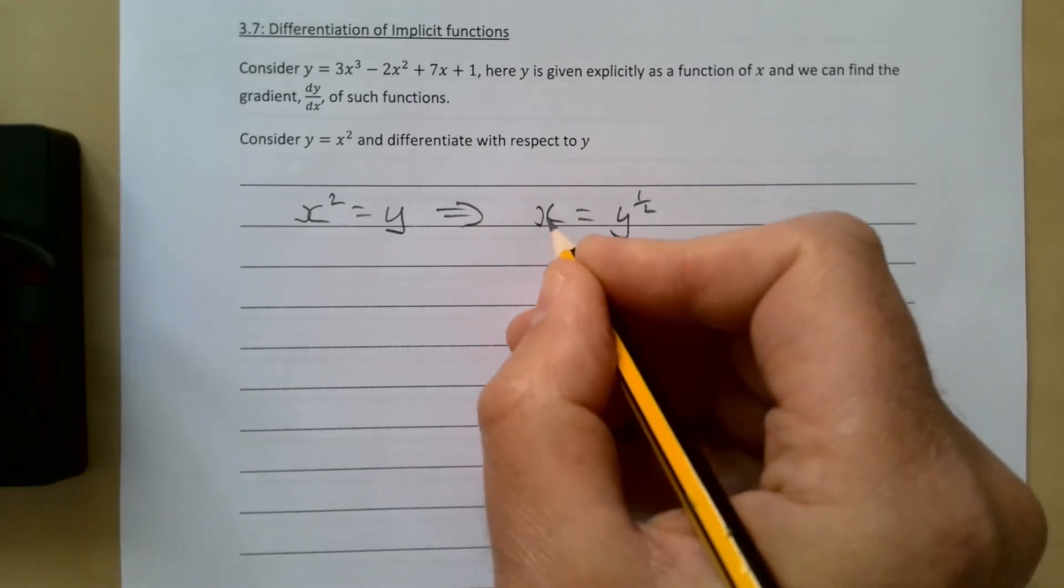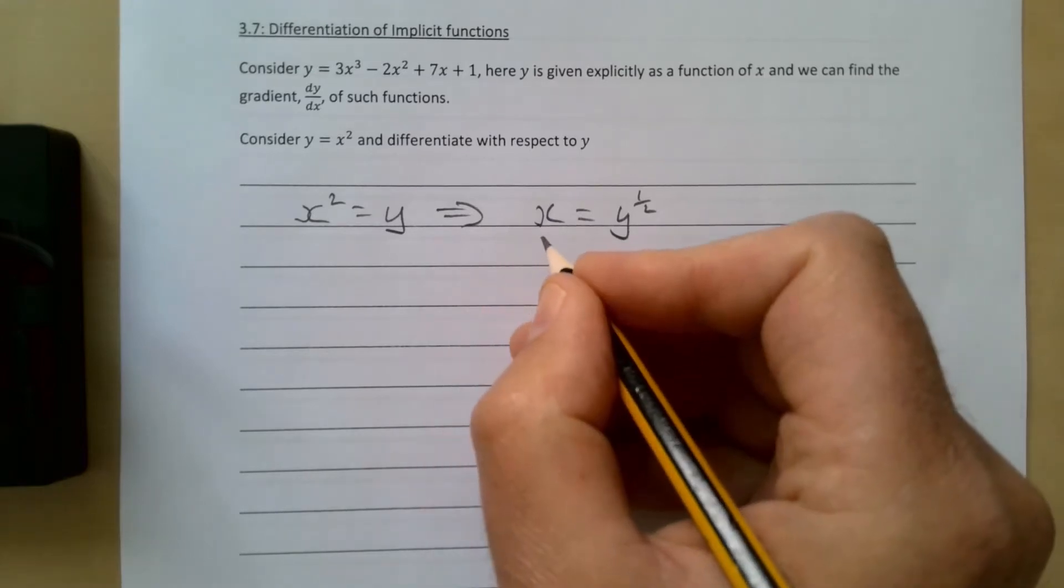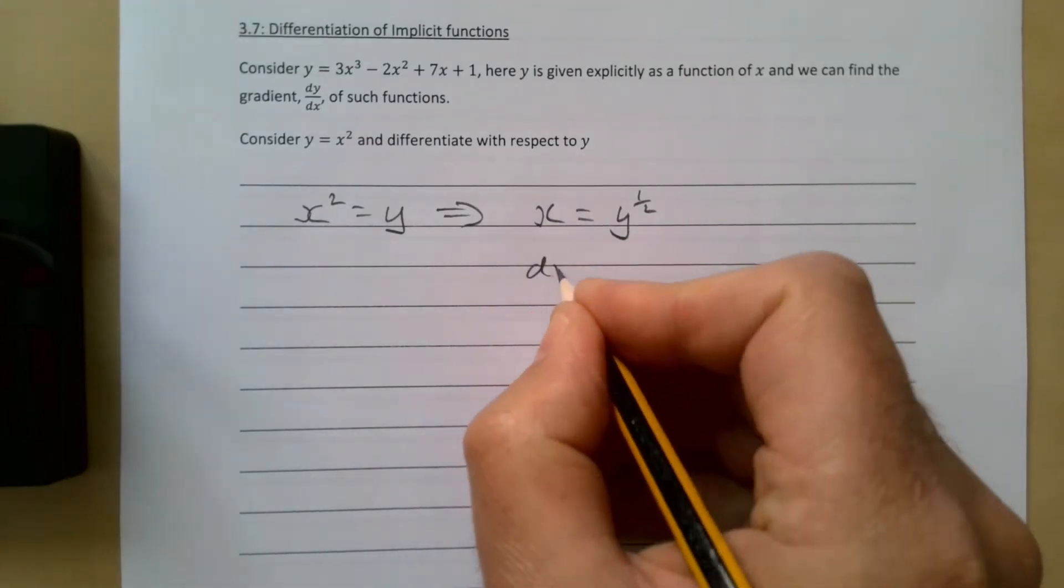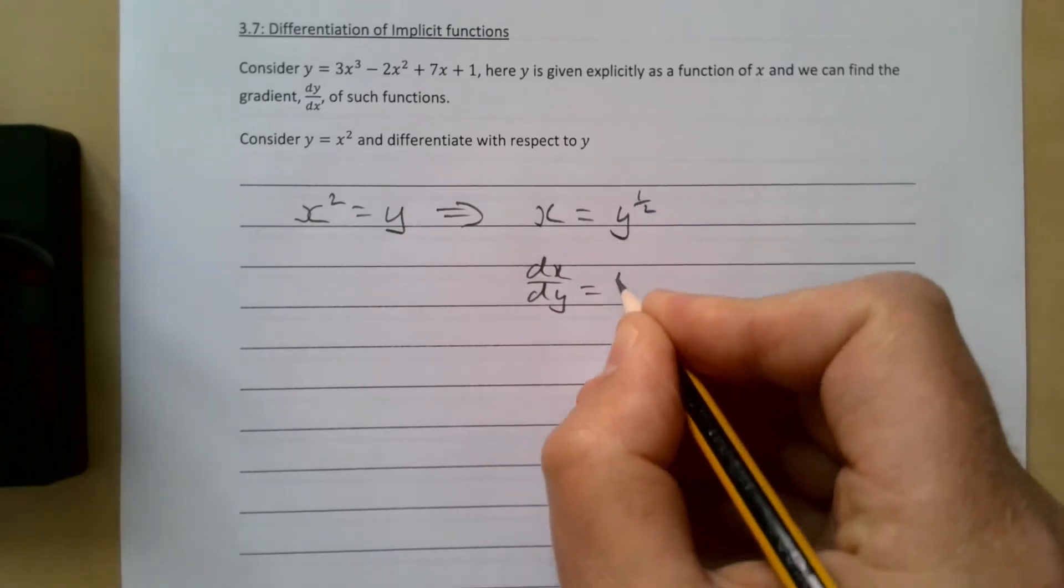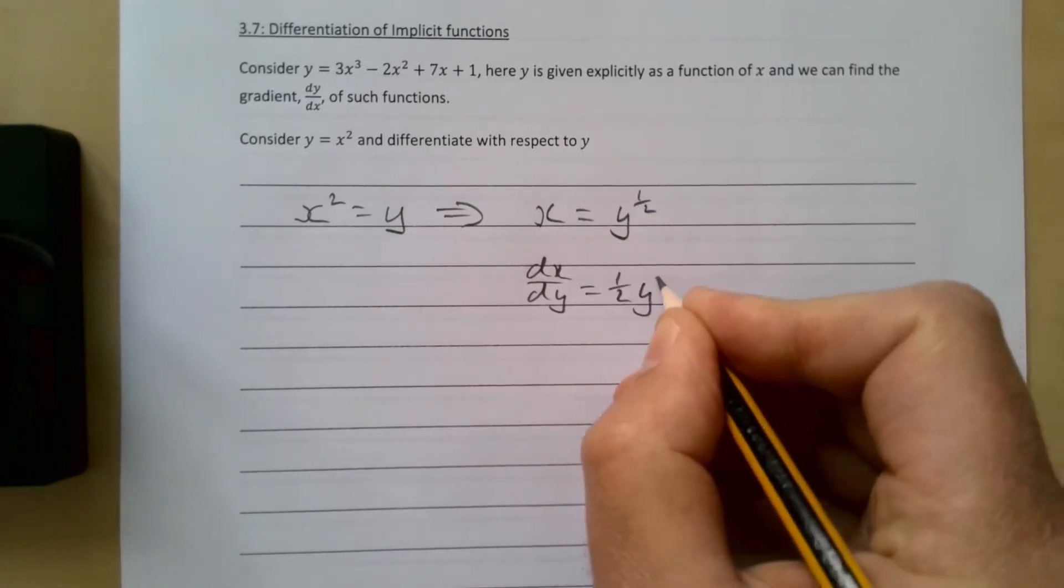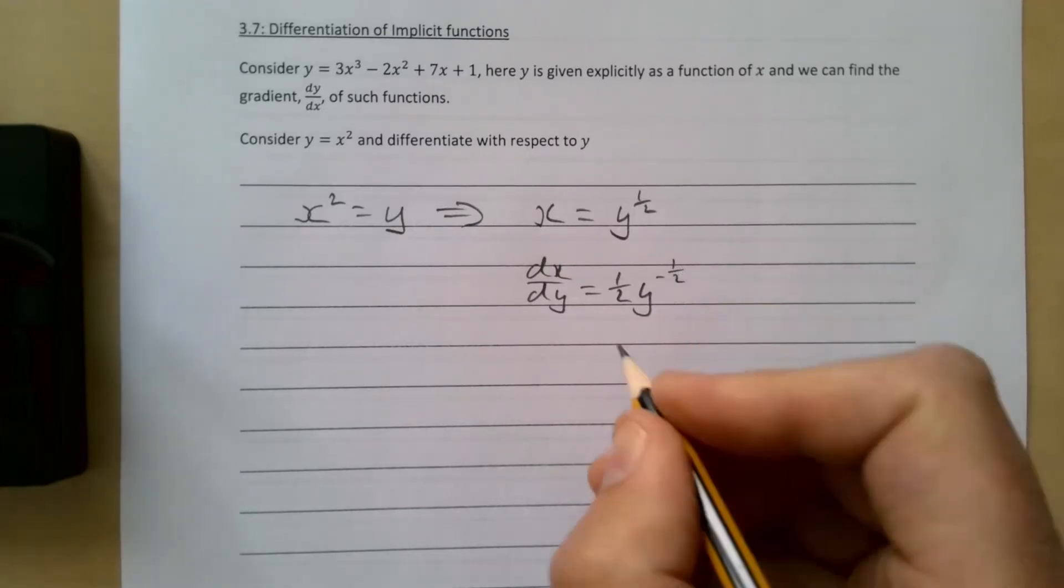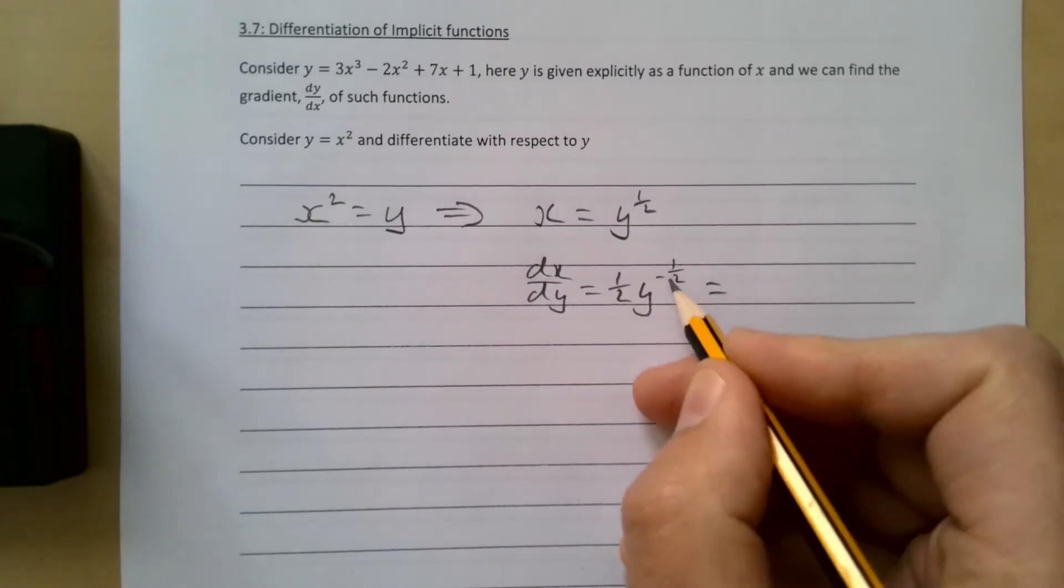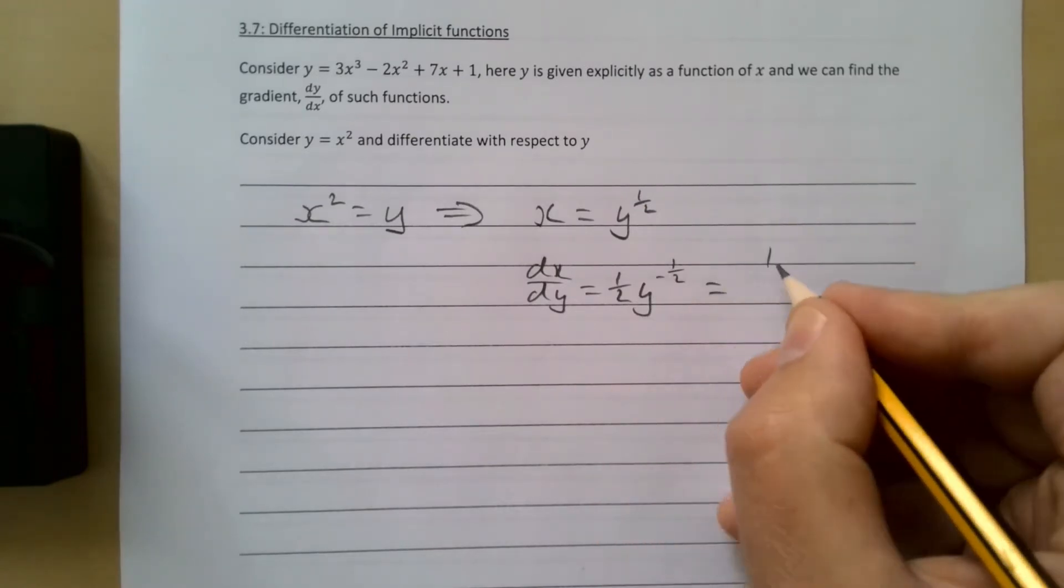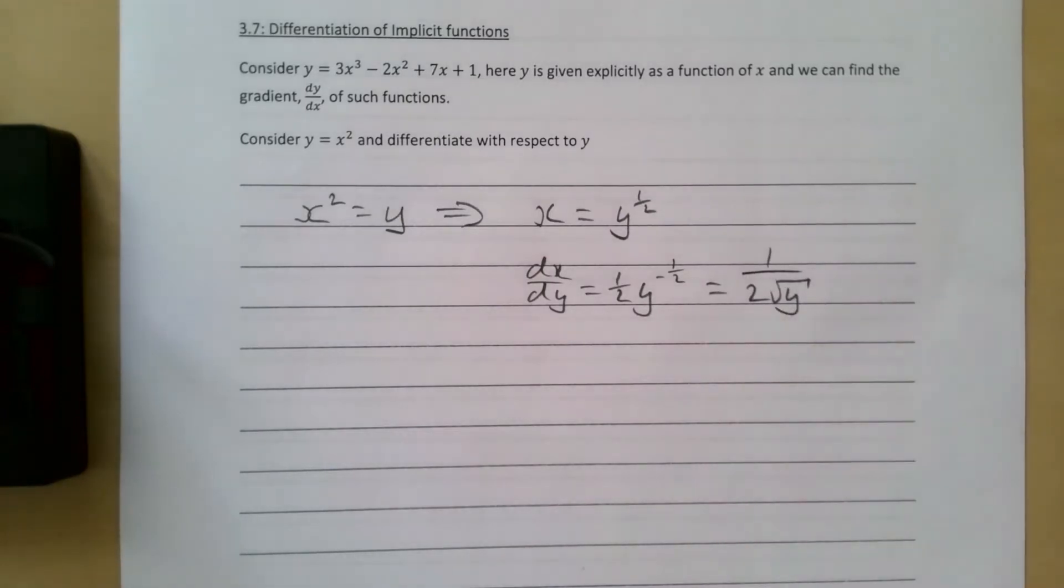If we differentiate this, we get dx/dy instead of dy/dx. Bring the half to the front, take away one from the power, and we end up with -1/2. Tidying that up, you get 1/(2√y).